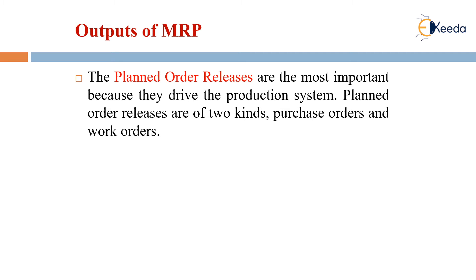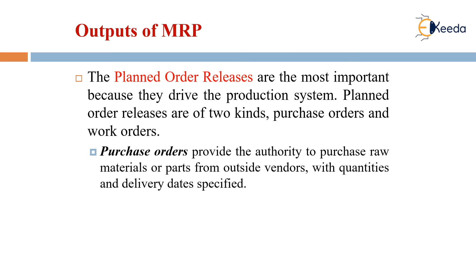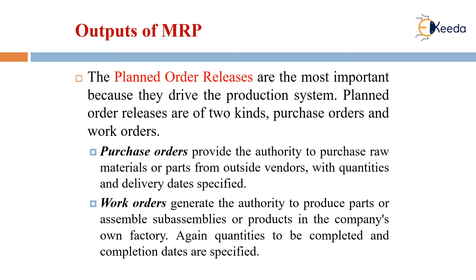Planned order releases are of two kinds: purchase orders and work orders. Purchase orders provide the authority to purchase raw materials or parts from outside vendors, with quantities and delivery dates specified. Work orders generate the authority to produce parts or assemble subassemblies or products in the company's own factory, with quantities to be completed and completion dates specified.